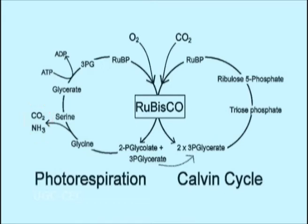Nitrogen is also released as ammonia, which must be detoxified at a substantial cost to the cell. Photorespiration also incurs a direct cost of 1 ATP and 1 NADPH.